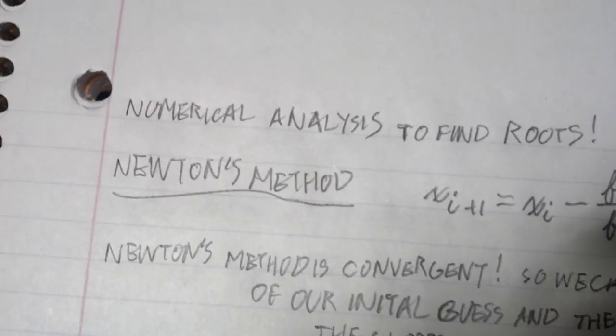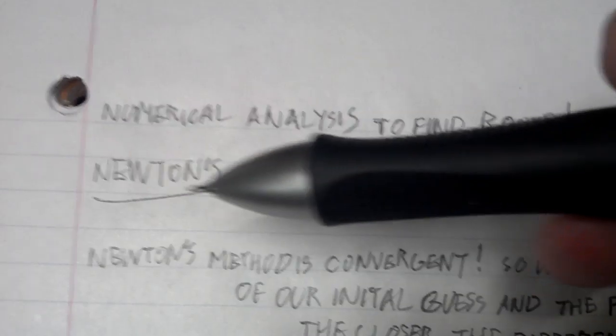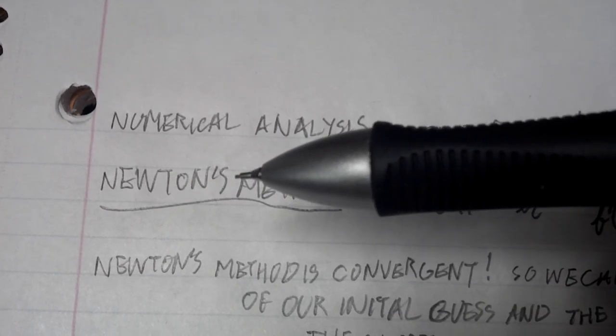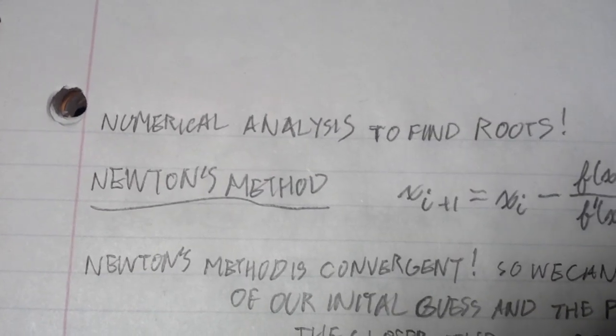Newton's method, or Newton-Raphson method, is a method for finding roots. The equation is generally named after Sir Isaac Newton.